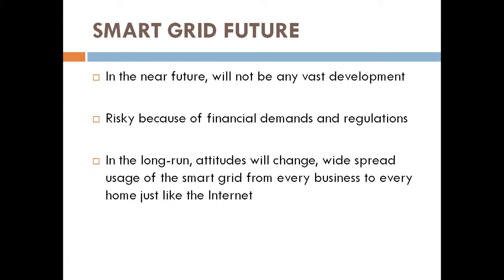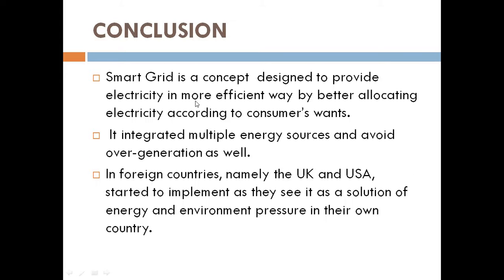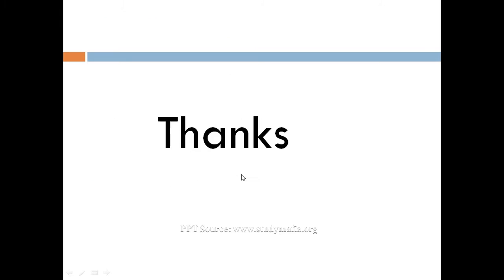In the long run, attitudes will change and there will be widespread usage of smart grid for every businessman and every home, just like the internet — when technology comes it is not always welcomed, but once it is there, people start using it and it becomes normal. In conclusion, smart grid is a concept designed to provide electricity in a more efficient way by better allocating electricity according to consumer wants, integrating multiple energy sources, and avoiding over-generation. Different countries, including the USA, have started to implement it as a solution for energy and environmental pressures.